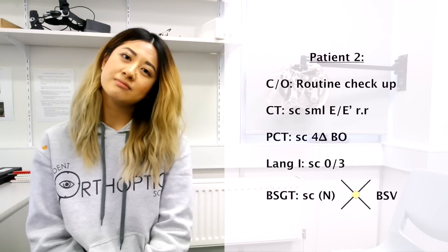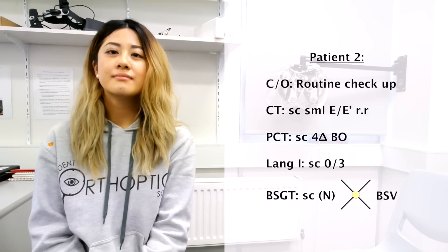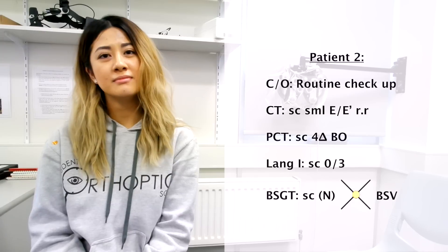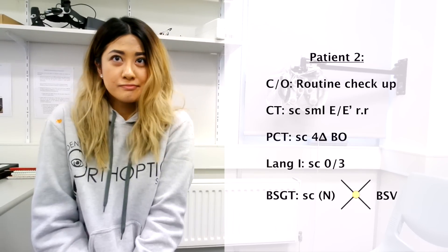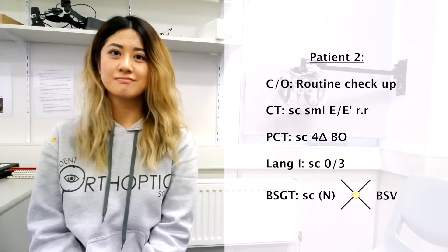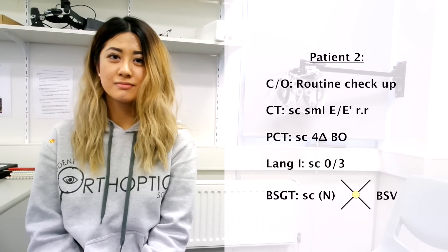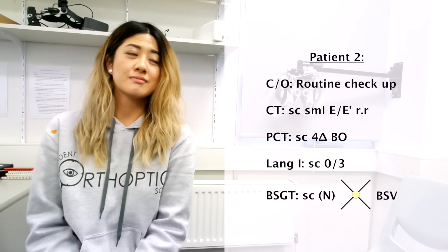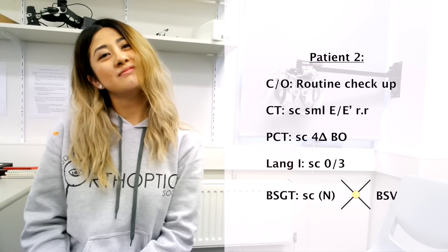Patient 2 has come in for a routine checkup. On cover test, a small esophoria near and far with rapid cover was found measuring to be four prism diopters. She found the Lang and a cross was noted on the Bagolini striated glasses test indicating binocular single vision.